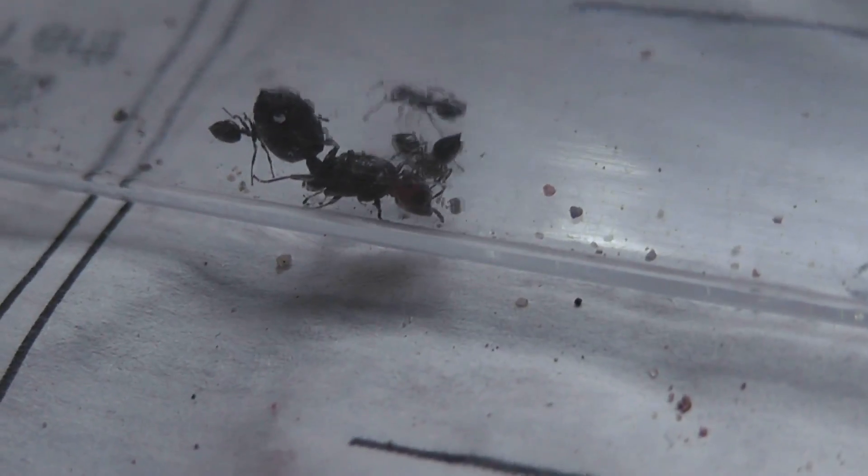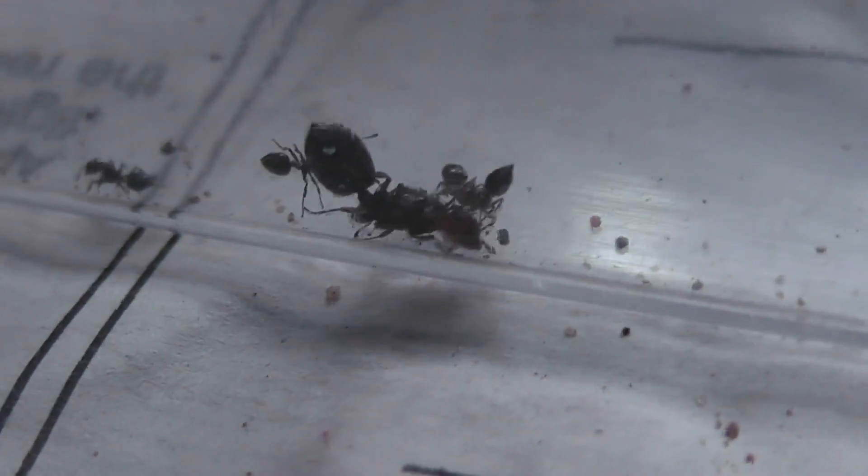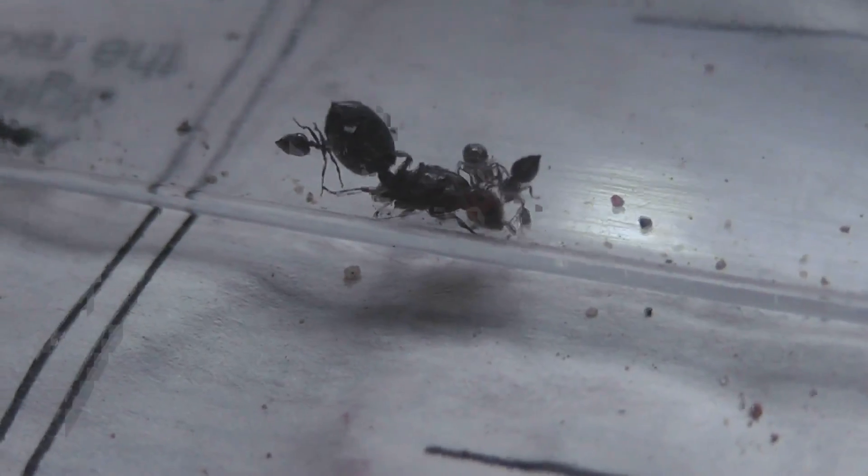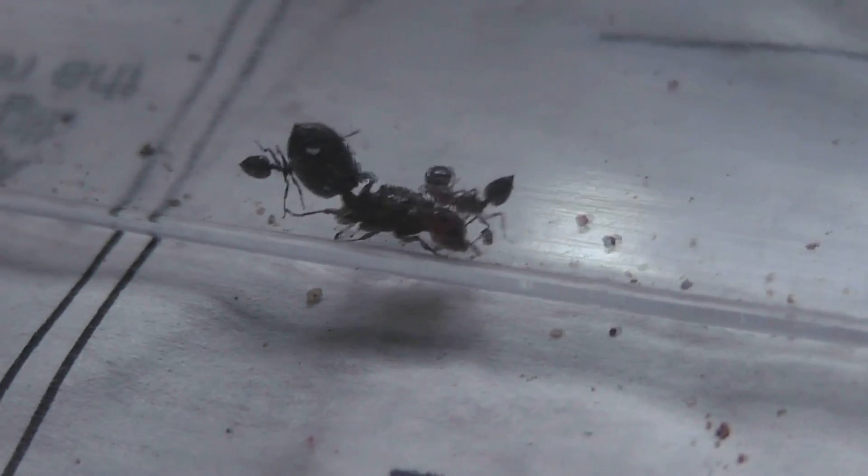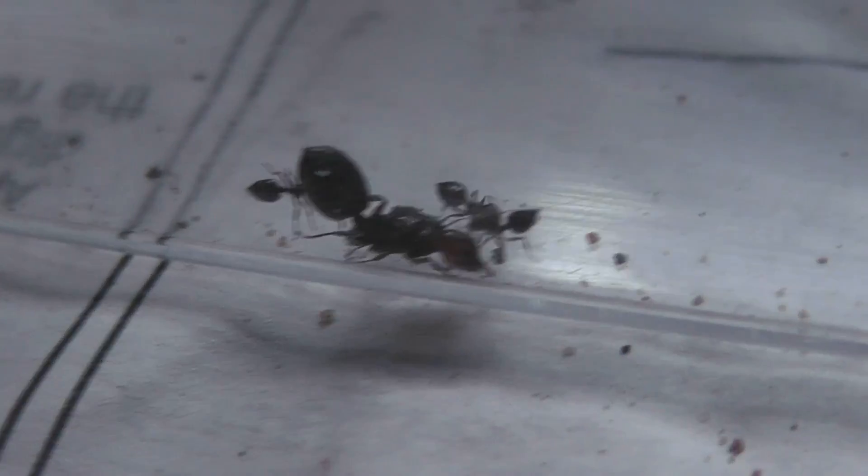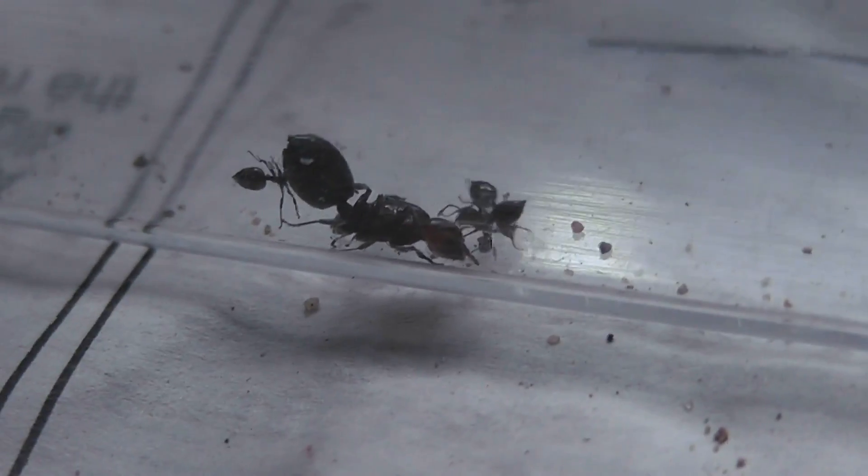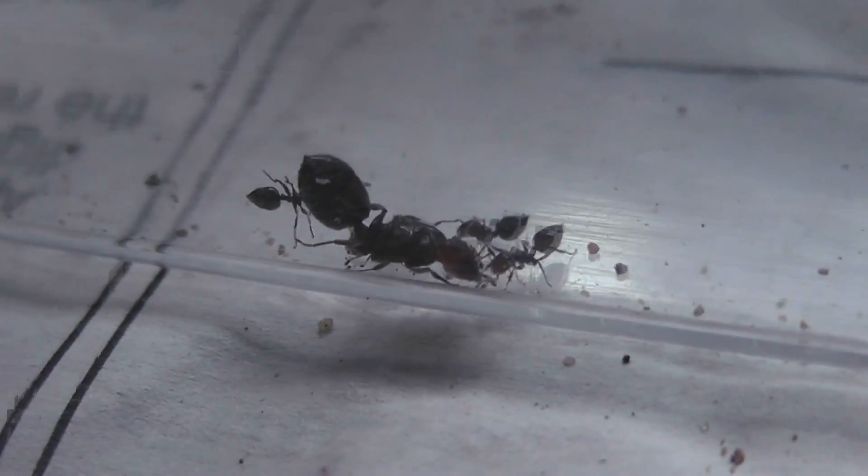Today I've received a small colony of Crematogaster scutellaris, which is a southern European ant that is all black with a red head. There's the queen and a few workers—there's 12 workers in total and a few larvae dotted about.